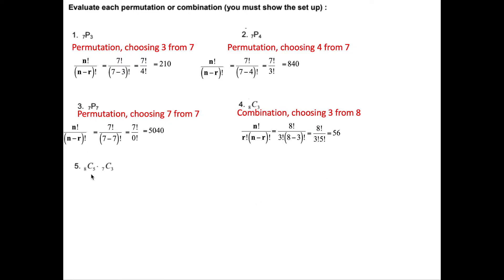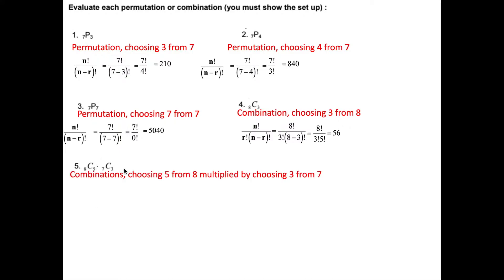Question number 5. Here we have two combinations multiplying each other. We're choosing five objects out of eight, and we're multiplying by choosing three objects out of seven. These are two combinations: choosing five from eight multiplied by choosing three from seven.